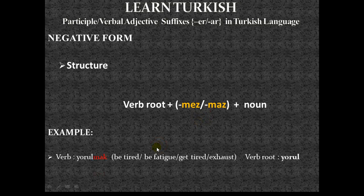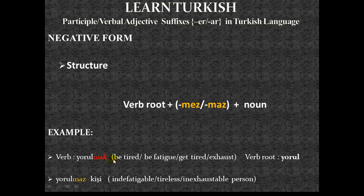Our example is 'yorulmak,' which translates as to be tired, to be fatigued, to get tired, or to exhaust. The verb root is 'yorul' after removing -mak. We add the -maz suffix — again depending on the verb root vowel letter — so it becomes 'yorulmaz kişi': indefatigable, tireless, or inexhaustible person.